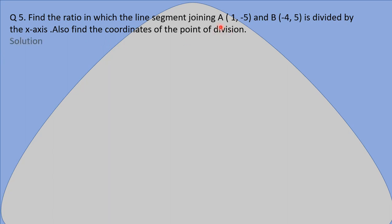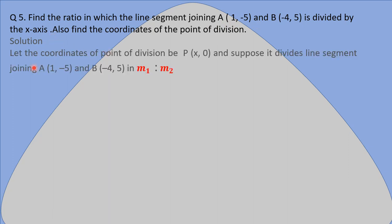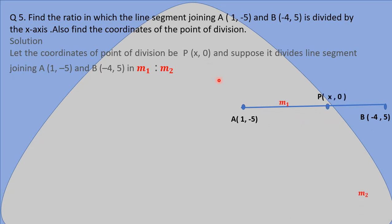Now here, this line segment AB is divided by a point that lies on the x-axis. When the point lies on the x-axis, its x-coordinate is present but the y-coordinate is 0. So let point P divide line segment AB in the ratio M1 : M2, and the coordinate of this point P is (x, 0).